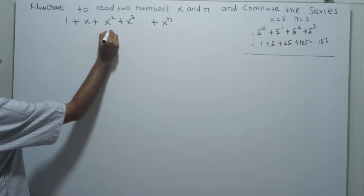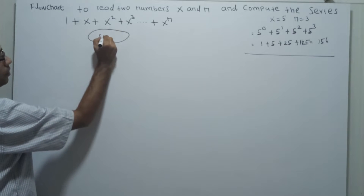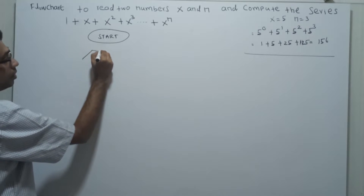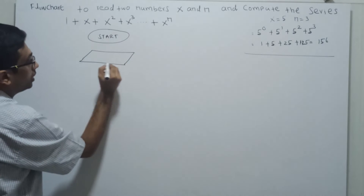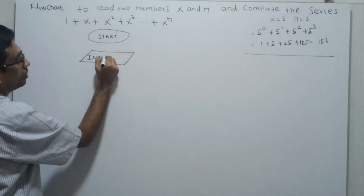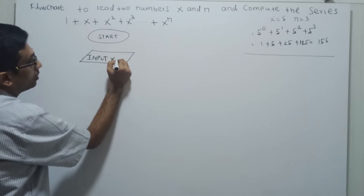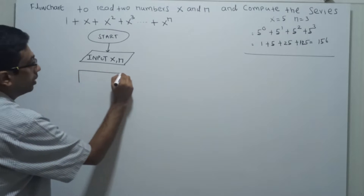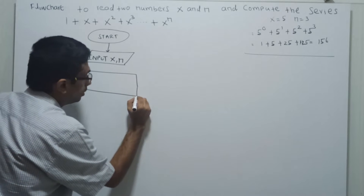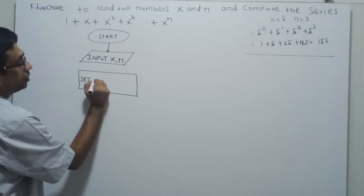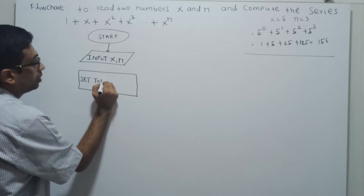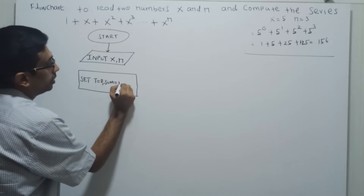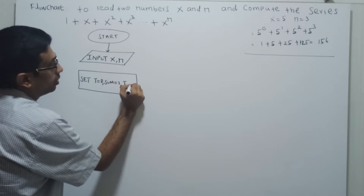Start of the flowchart. I am reading two values, that is n and x. Now I am setting the initial values: t equal to 0, sum equal to 1, and i equal to 1.